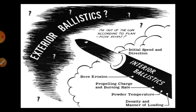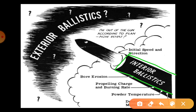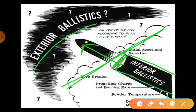अब यह हम इसको diagram पर देख लेते हैं कि जो internal ballistics होता है वो कहाँ से कहाँ तक रहता है. यहाँ पर आप देख सकते हैं - यह suppose करिए यह आपकी barrel है, इसके पीछे का side यह पूरा आपका firearm होगा. यह जो आपका barrel का बिल्कुल front end होता है, जो बिल्कुल ending point होता है, उसको हम बोलते हैं muzzle end. Muzzle end से जब आपकी bullet leave कर जाती है, muzzle end से आपकी बाहर निकल चुकी है, तो इसके बाहर जितना भी रहता है वो आपका exterior ballistics या external ballistics में include किया जाता है.